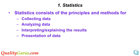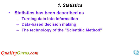To make fact-based decisions, we need data. Statistics help us in collecting data, analyzing it to reveal trends, interpreting and explaining the results, and presenting the data. Statistics help us in converting data into information, which helps us in making decisions.